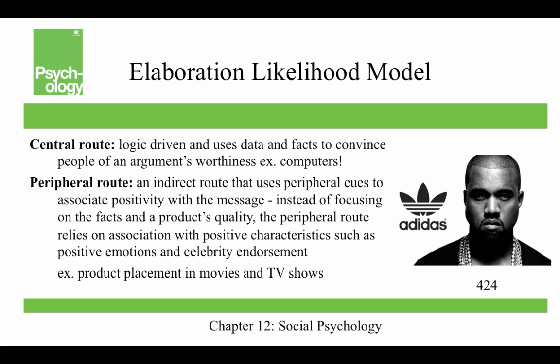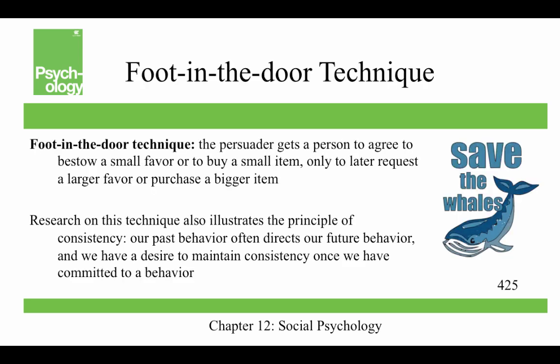An example of the peripheral route is product placement in movies and TV shows. In the old movie A Few Good Men with Tom Cruise, his character drinks Yoo-Hoo and talks about how much he loves it — it's a chocolate milk-flavored drink. In reality, no one really drinks it, but in the movie the character is crazy about it. That has to be some kind of product placement.